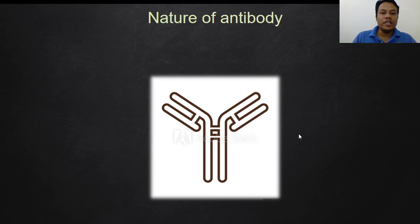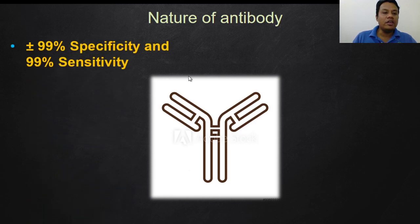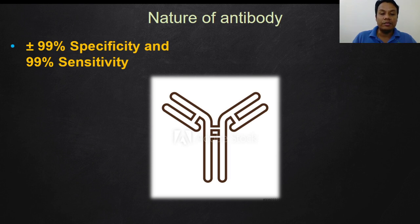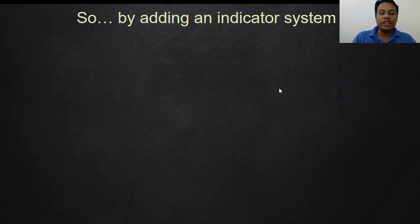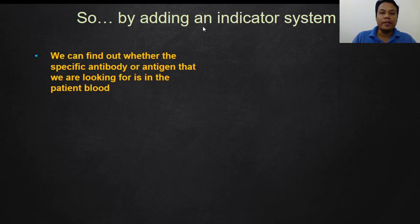Antibodies are known to be very good in specificity and sensitivity, and they can be produced commercially. We can produce antibodies against most available substances — any kind of microorganism, proteins, or drugs. So EIA is a very versatile method. By adding an indicator system — a system where we can observe the reaction — we can find out whether the specific antibody or antigen we are looking for is present in the patient's blood.